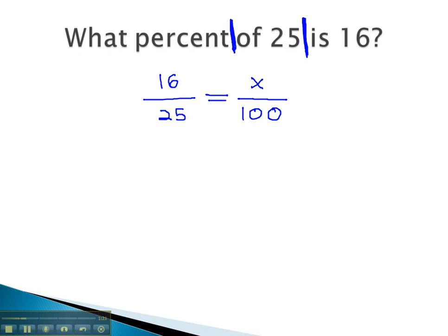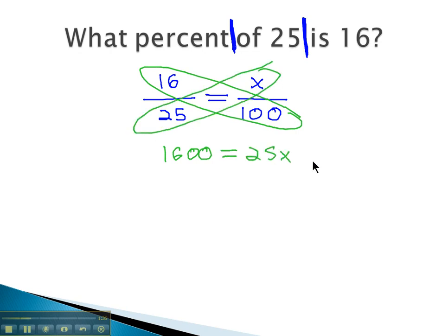We now have a proportion which could be used to answer this question. We can multiply our diagonals. 16 times 100 is 1600. Equals the other diagonal, 25 times x, which is 25x.